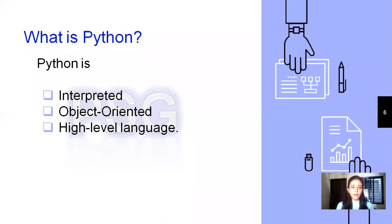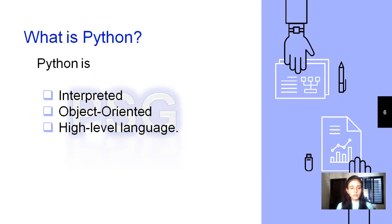Python is interpreted. Why interpreted? Because most of its implementations execute instructions very freely and easily. In different programming languages, for example C language, we have to compile the code first and then we can run. But in Python, it is not the case. We can also make use of the OOP concept, that is the object oriented programming concept, so in Python we can write code related to class and objects.